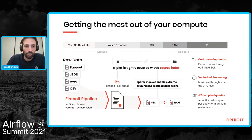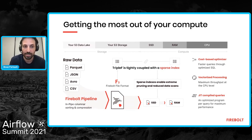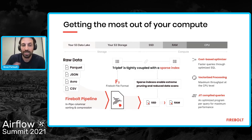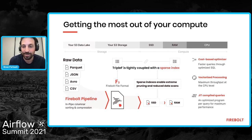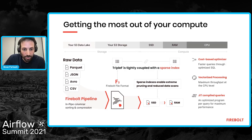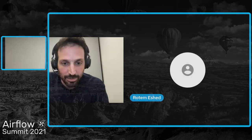On the CPU side, there's another set of technologies from the columnar database world — vectorized processing and an optimizer. I won't go into detail there, but these complement how the CPU achieves maximum horsepower for analytic workloads.